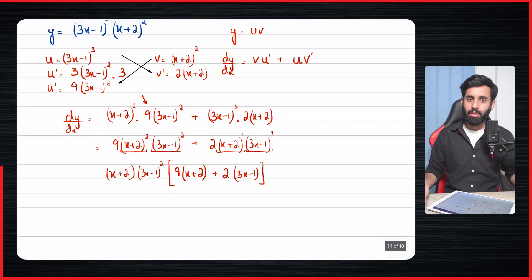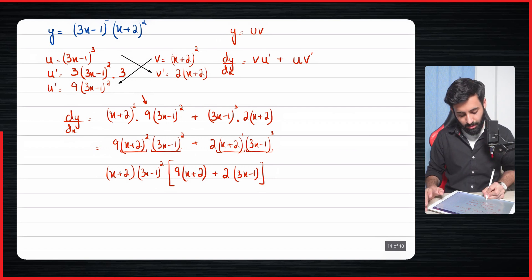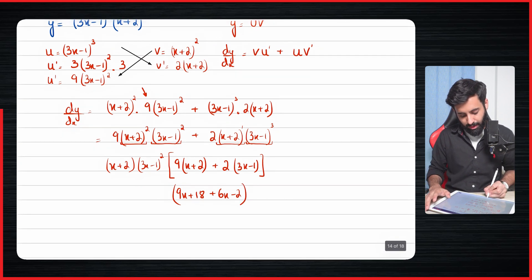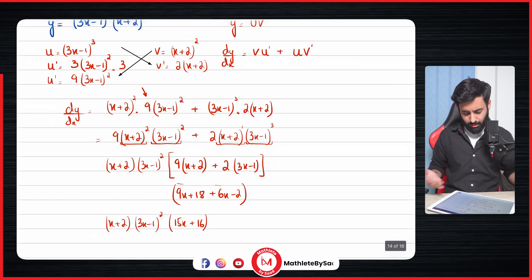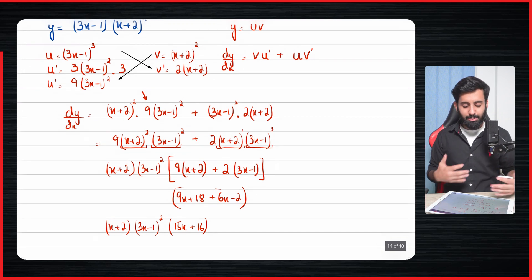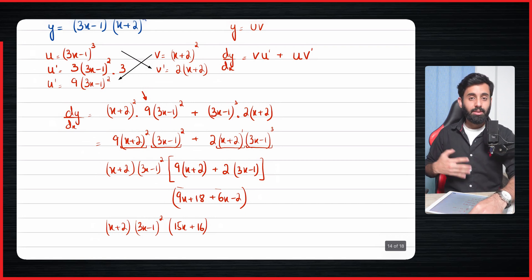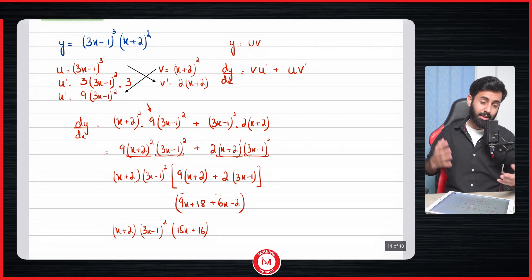If the question asks you to simplify, expand inside the bracket: 9x + 18 + 6x - 2, which simplifies to 15x + 16. So the final answer is (3x - 1)²(x + 2)(15x + 16). This was just an introduction to the product rule. In the next video we'll do more examples covering both basic and complex ones. That's it for this video — take care, bye!